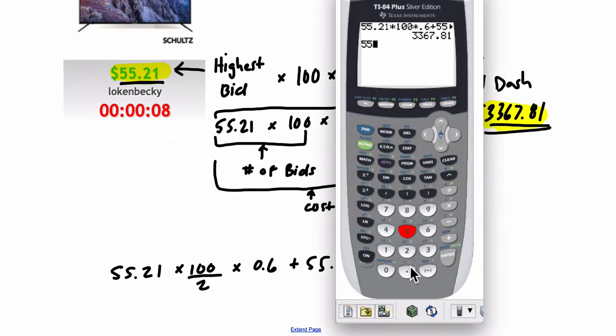So we do that. So if you won this, you would do 55.21 times, instead of 100, we'll do half of that, 50. And then we'll multiply that by 0.6, and then we'll add 55.21, and you'll see what you would have paid, which is $1,711.51.